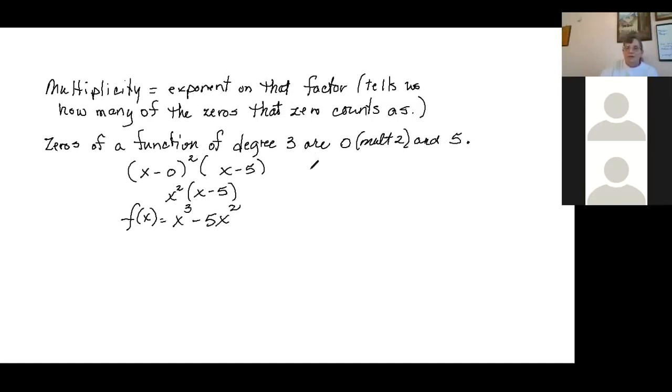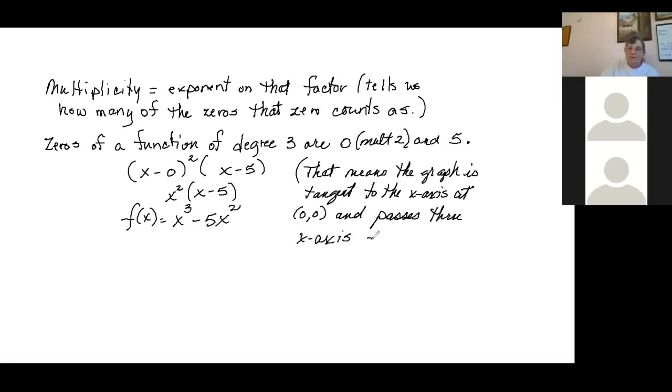Recall that while it's not necessary in this section, that means the graph is going to be tangent to the x-axis at the point zero, zero and it passes through the x-axis at the point five, zero.